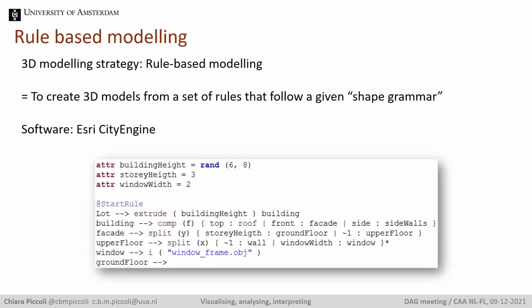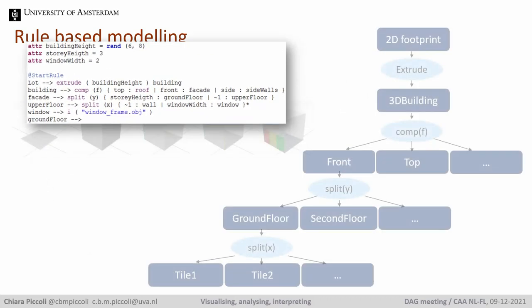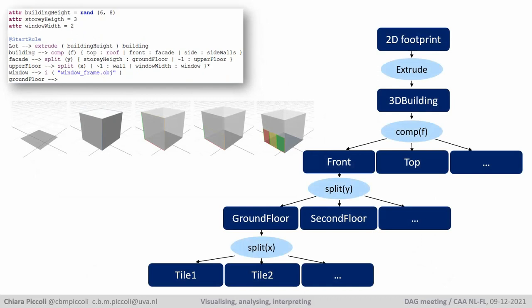Before going into the various case studies, let's briefly talk about rule-based modeling. As the name suggests, it means creating 3D models from a set of rules that follow a given shape grammar. Specifically, CityEngine is based on the computer-generated architecture CGA shape grammar. The 3D geometry is constructed by progressively adding more details. You start with an extrusion which creates a 3D volume from a 2D shape, then split the volume into individual faces, establishing parameters for further subdivision. The syntax is unique to CityEngine but written similarly to a scripting language.